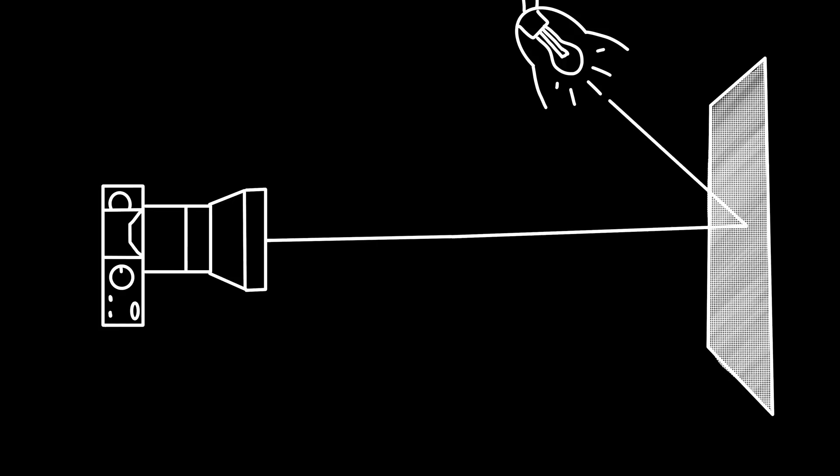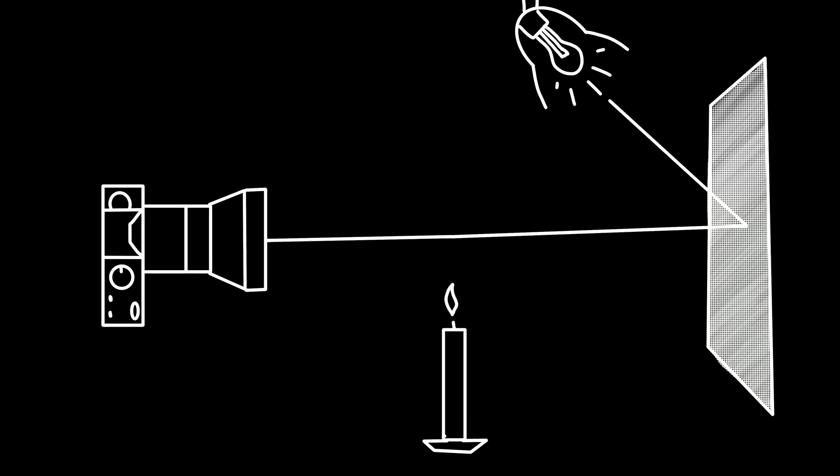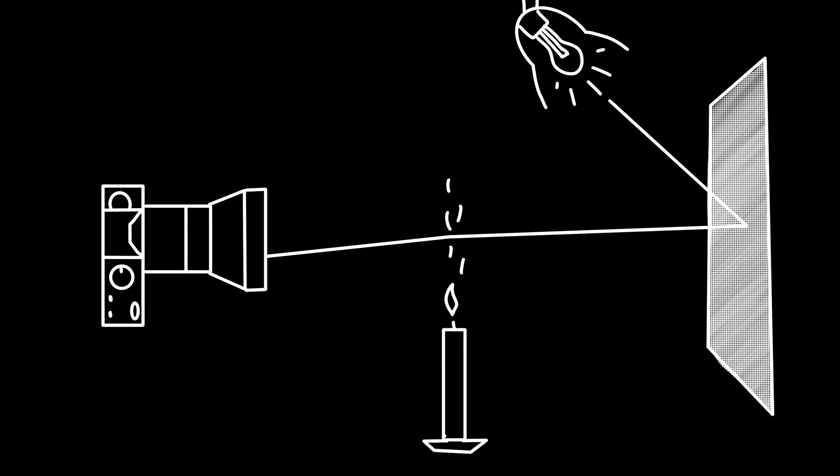You start by capturing an image of the felt as-is, and then you introduce something like a candle flame between the camera and the background and take another image. The heat of the candle will cause a slight bending in the air, and therefore the pixels on the background felt will be refracted ever so slightly — and what you'll be able to see is that slight bending of light.